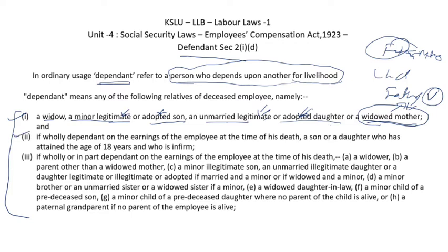The second category covers persons over 18 years of age — whether a son or daughter — who are infirm due to physical challenges or mental illness and are not in a position to earn. Even if they are more than 18 years old, if they cannot earn their livelihood due to physical challenges or mental illness, they will be considered dependents. This is the second set of dependents.